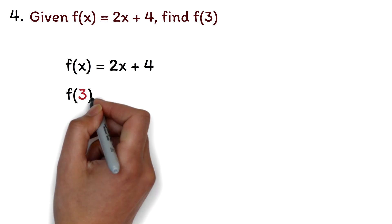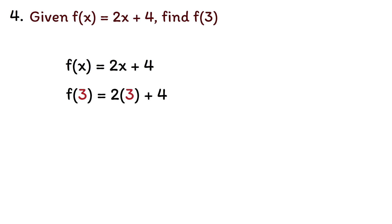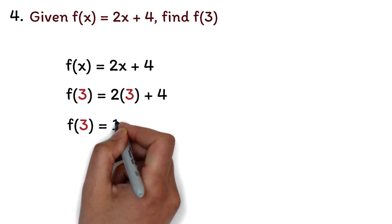So, we have f of 3 equals 2 times 3 plus 4. 2 times 3 plus 4 is 10. Therefore, f of 3 equals 10.